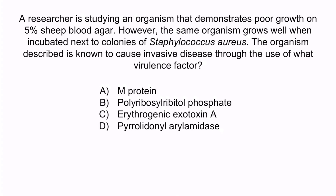Returning to the question, A is wrong because M protein is a virulence factor associated with Strep pyogenes — recall that Strep pyogenes is beta-hemolytic, so it would grow well on blood agar. C is also related to Strep pyogenes; recall that this is a toxin that causes an overwhelming release of cytokines resulting in shock. D is incorrect because this is an enzyme also known as PYR, associated with Strep pyogenes and enterococcus — PYR positivity can be helpful in identifying the organism, but it is not a virulence factor. So again, the correct answer is B, polyribosylribotyl phosphate.